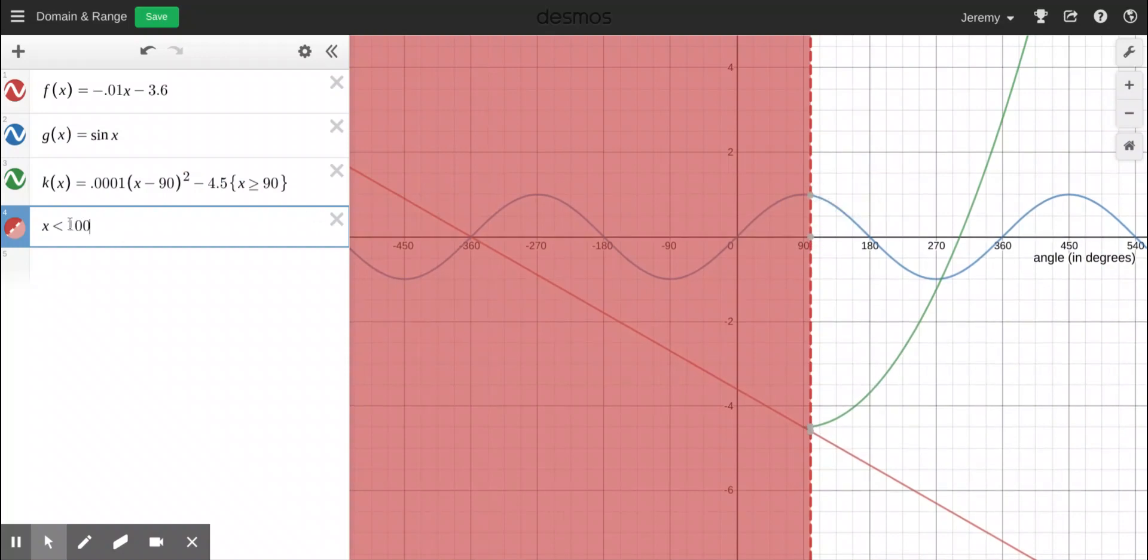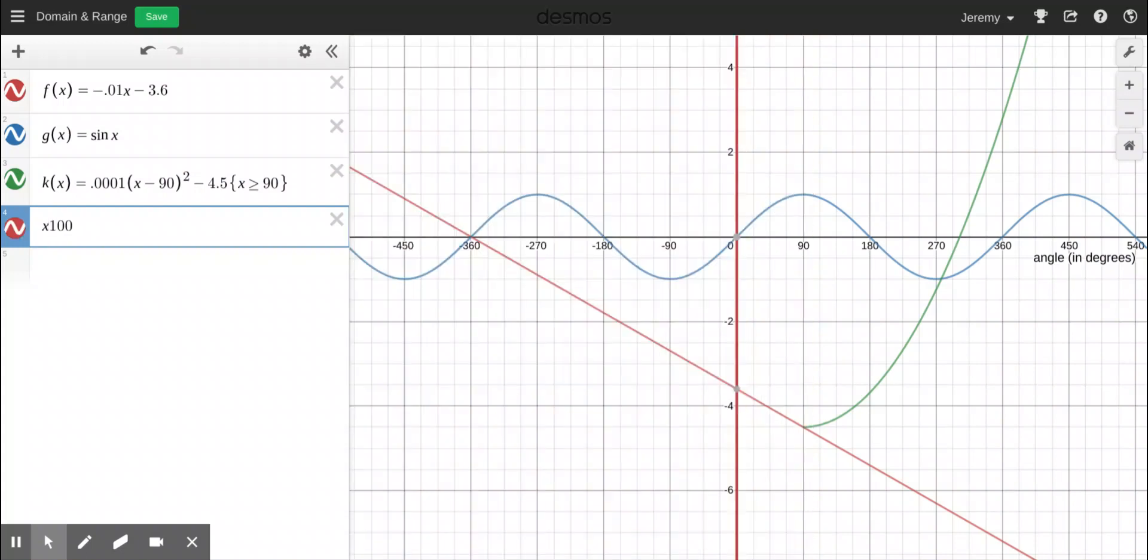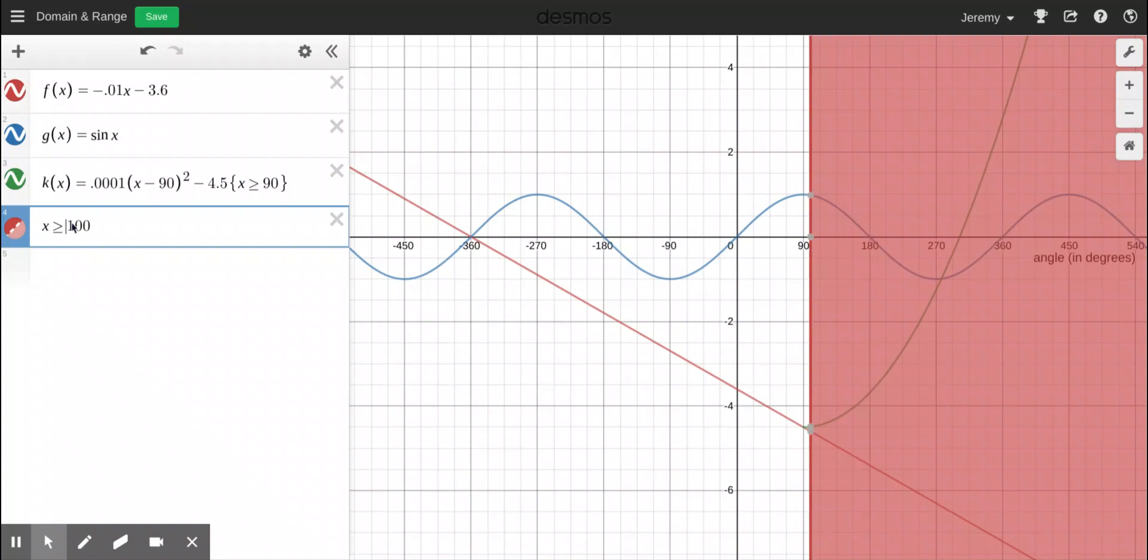If I put an equal sign after the less than, it'll do less than or equal to. Notice the difference is that if it's just less than, it's dotted to show that the points on the line 100 are not solutions, because 100 is not less than 100. So that's that. If I change it to greater than or equal 100, notice it's shading the other side.